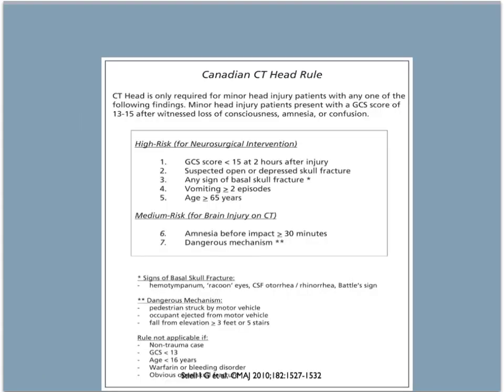Applying this to our patient: if she has fallen more than five steps, vomited more than twice, or has any amnesia of more than 30 minutes, she must get a CT scan of the head. If she has none of these, her examination is normal for potential skull fracture, and her GCS returned to 15 two hours after the injury, then she does not need a CT scan of the head. You also want to keep in mind that she is not on any medication that can increase her bleeding risk.